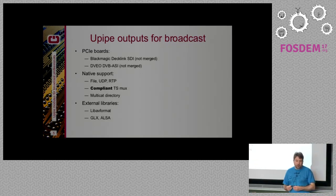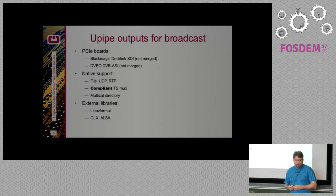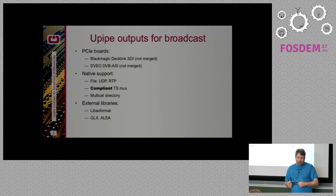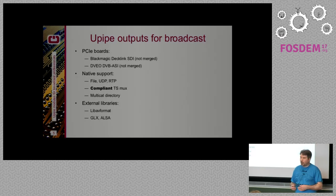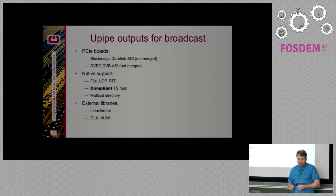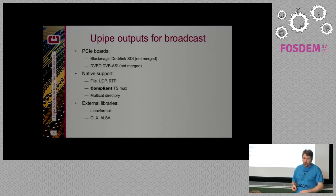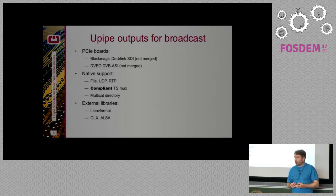For outputs, we have hardware SDI and ASI outputs that haven't been merged yet but exist on GitHub — you can ask us where. Natively we support file, UDP, RTP, and a compliant TS mux. That last one is probably what differentiates us most from other projects: we have a compliant TS mux whose output streams are analyzed by a professional analyzer and pass. We also have multi-cat directory output, and external library support — libav format, which works in production for RTMP, Icecast, and other formats, plus GLX/Alza. There's also a Wayland output being worked on.